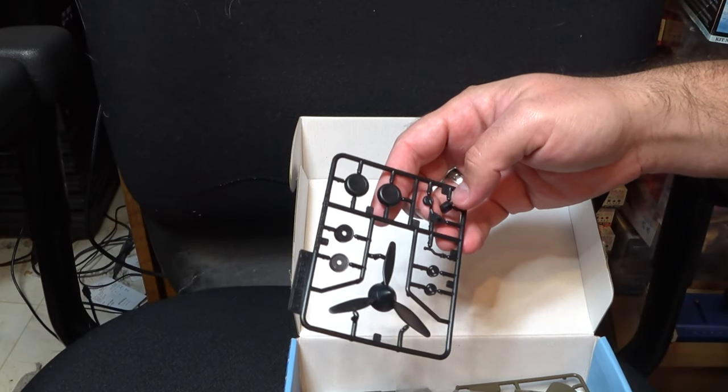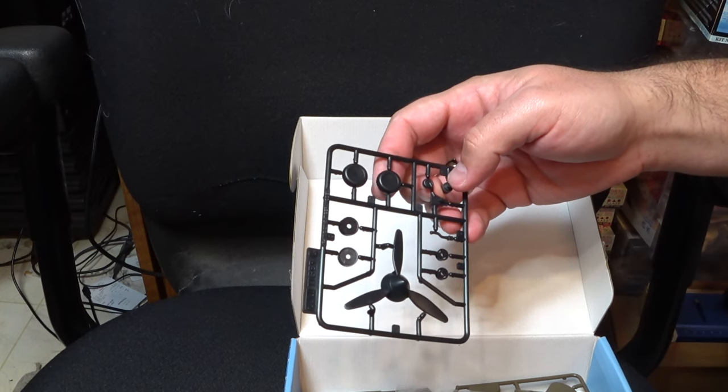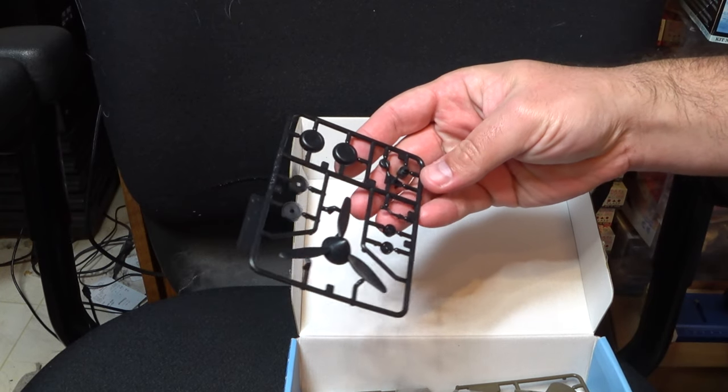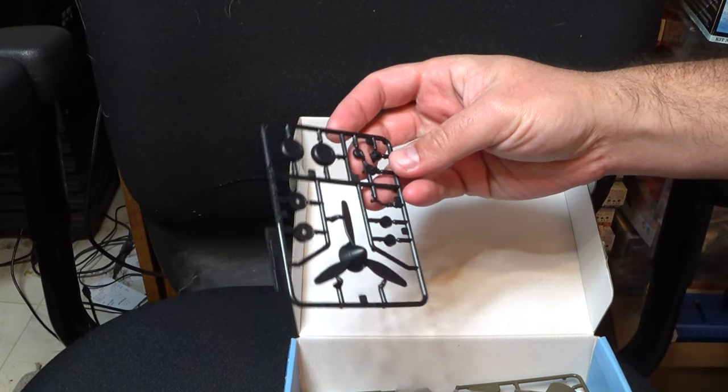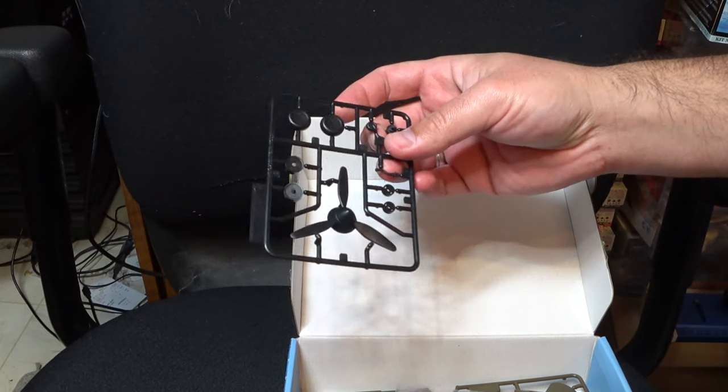Starting off, we've got our prop, landing gear, wheels, and a couple other odd end detail pieces including our tail gear and our control stick.